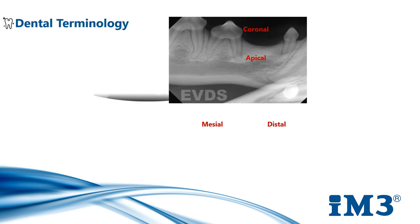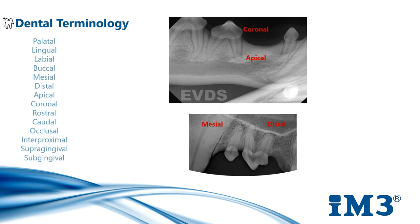Here is a list of dental-specific terminology which will help you accurately describe pathology in the mouth when performing dental charts. Palatal describes the surface of the tooth towards the palate in maxillary teeth and towards the tongue in mandibular teeth. Labial is the surface of the tooth towards the lip. Buccal is the surface of the tooth towards the cheek. Mesial refers to towards the central incisor, and distal refers to away from the central incisor. Apical is towards the root tip, and coronal is towards the crown.